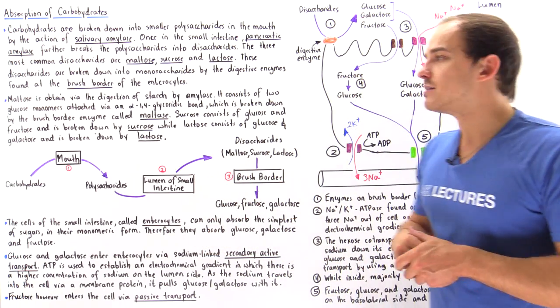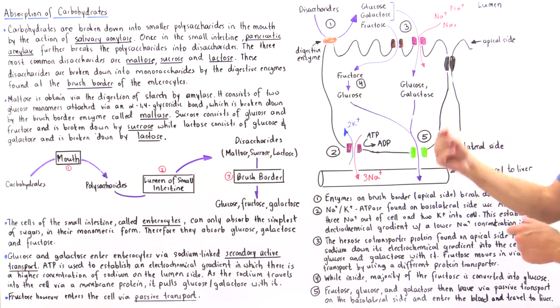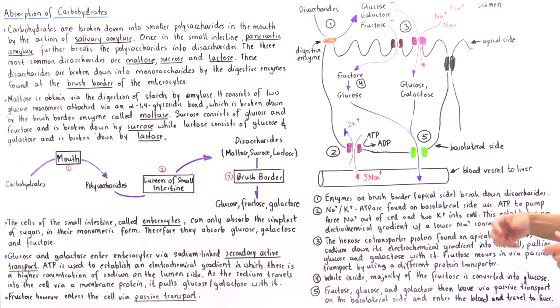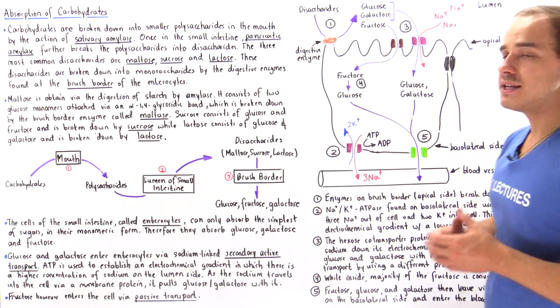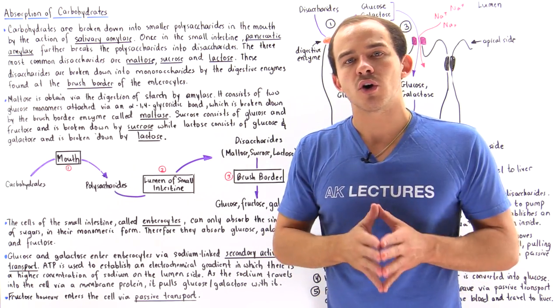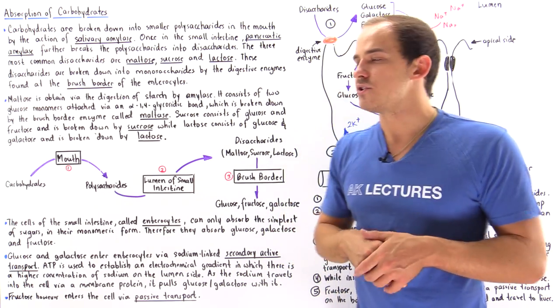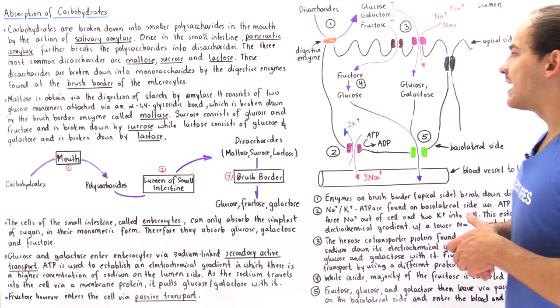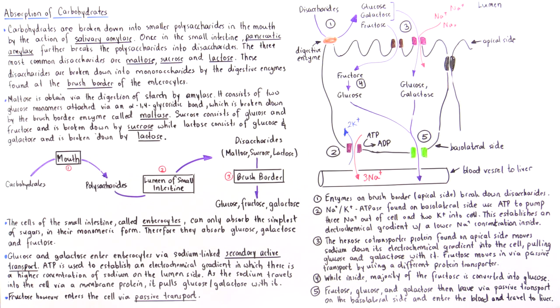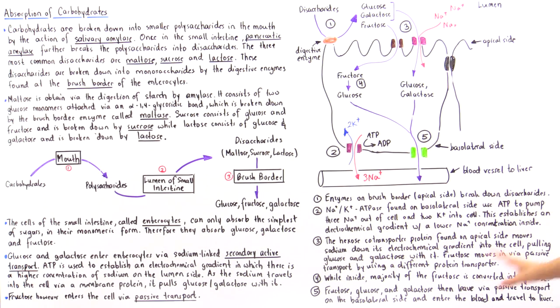Inside the liver, glucose will be transformed into glycogen and stored in liver cells as well as muscle cells. Let's summarize what we just said.